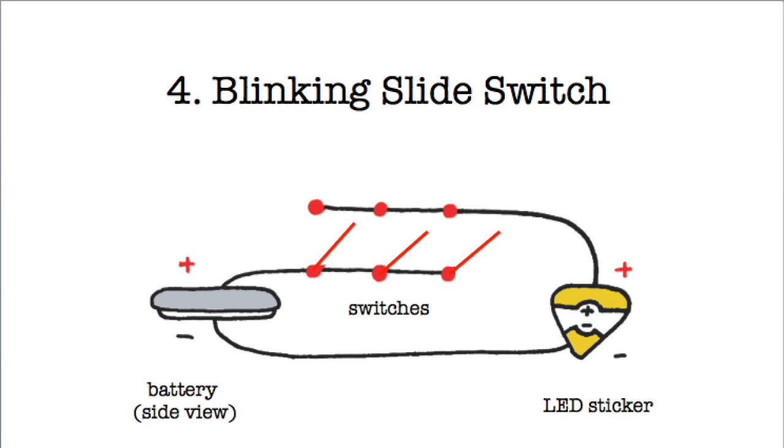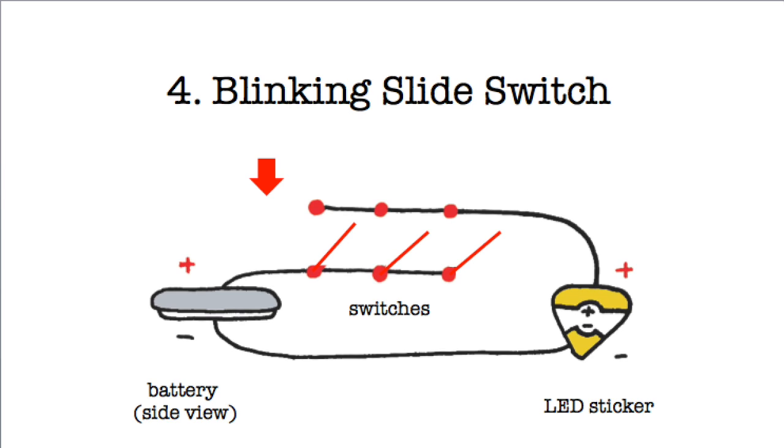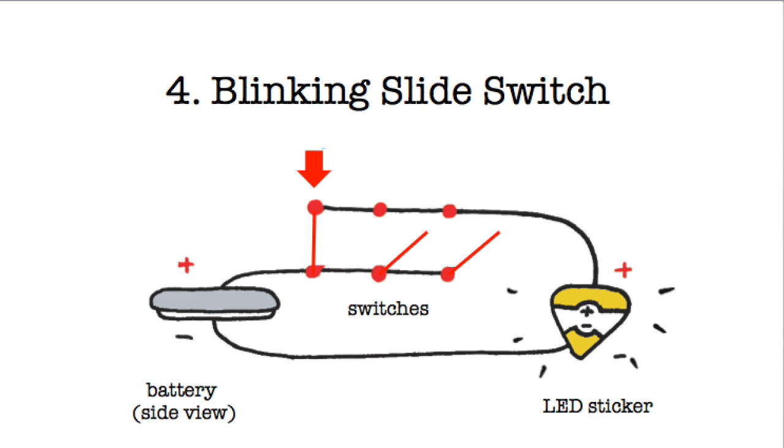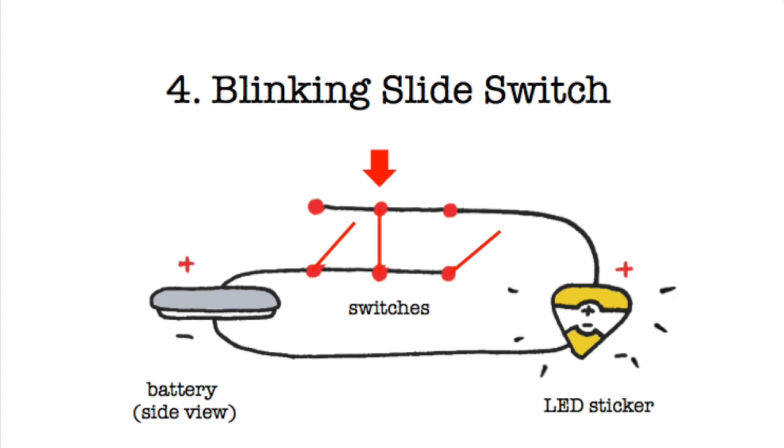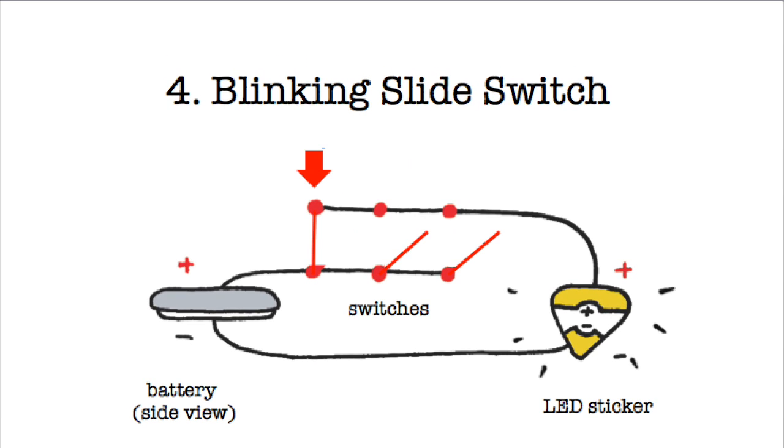The blinking slide switch is actually a collection of many switches put together to control one light. The switches are arranged in a line so that as you slide your finger across, you turn on and off the first switch, then the second switch, then the third switch. This causes a blinking pattern in your light. The faster you slide your finger, the faster the blink.